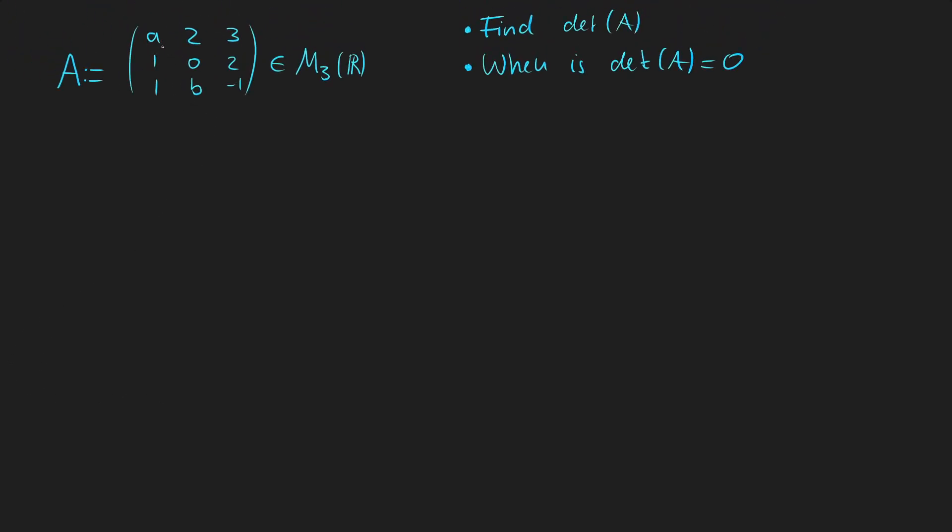In this exercise we have given a 3x3 matrix and we have two variables inside it, which are A and B. Now we need to find the determinant of A depending on A and B. And the second part of the exercise is to find out when the determinant of A equals zero.